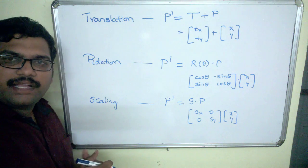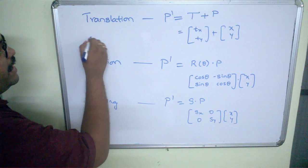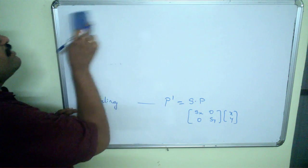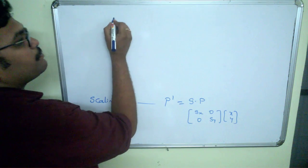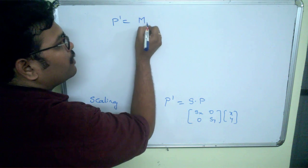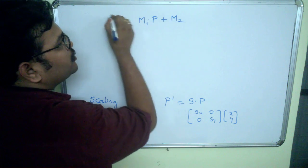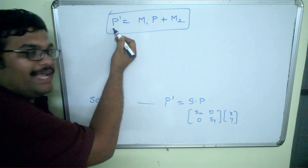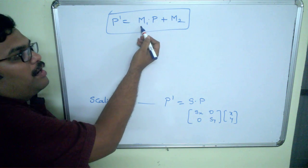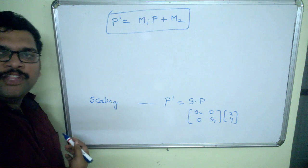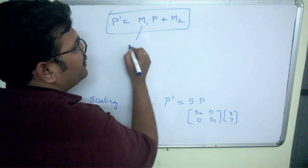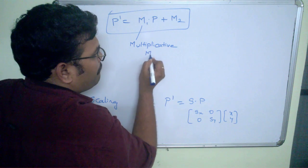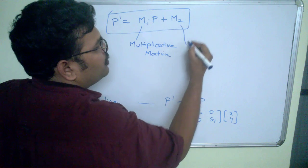Any transformation function can be represented using a general format: P-dash equals M1 into P plus M2. This general expression represents any of the three transformations, where P-dash is the new coordinate, P is the old coordinate, M1 is a multiplicative matrix, and M2 is an additive matrix.